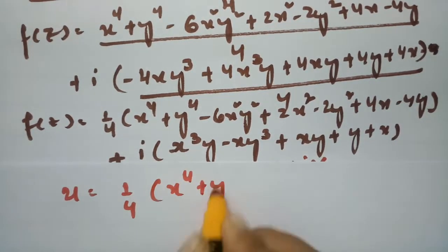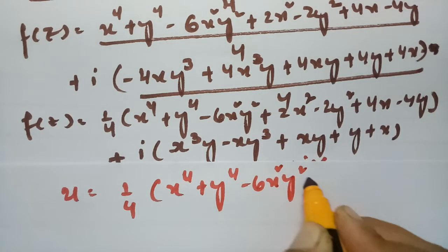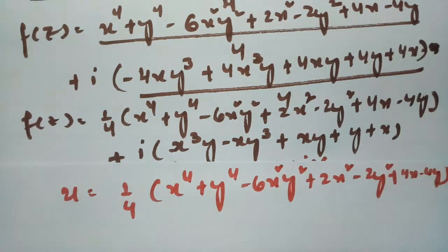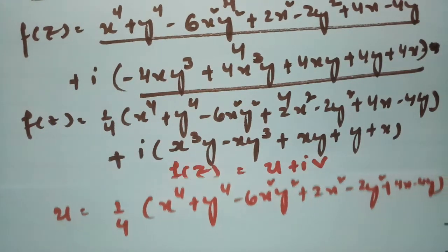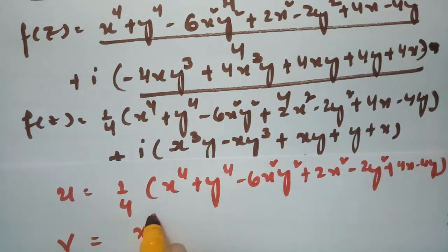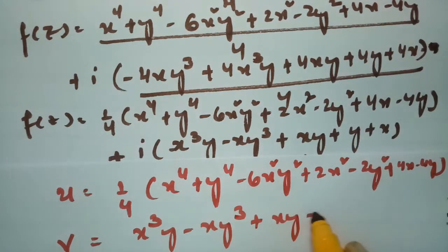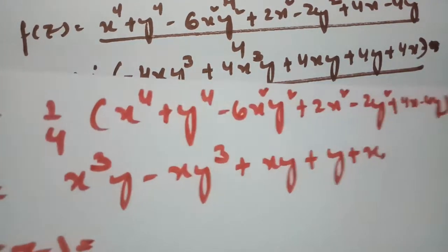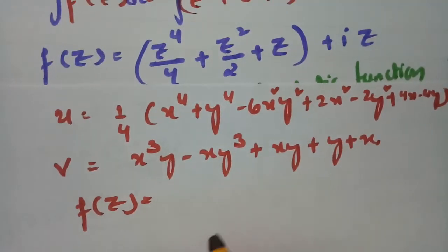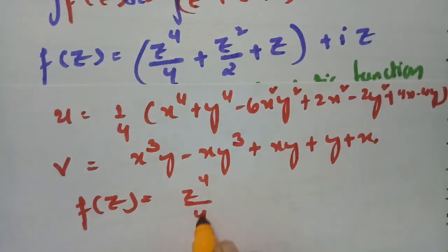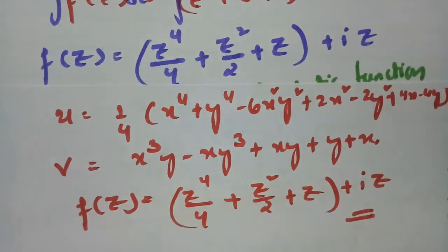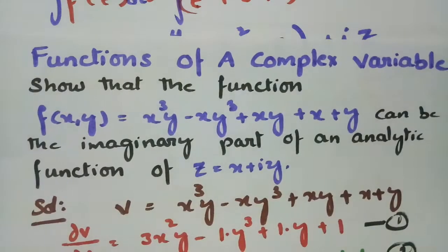So our real part is u equals 1/4 times (x⁴ + y⁴ − 6x²y² + 2x² − 2y² + 4x − 4y), and our imaginary part is v equals x³y − xy³ + xy + y + x. Our analytic function is f(z) = z⁴/4 + z²/2 + z + iz. This is how we get the real part, imaginary part, and the analytic function.